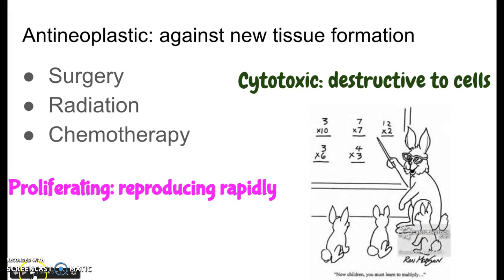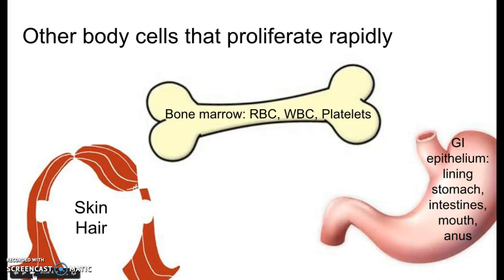Unfortunately, there are a few body cells out of the trillions we have that do proliferate rapidly. Most of those are found in three areas. The first is skin and hair. Skin and hair cells do proliferate rapidly, and chemotherapy doesn't know the difference, so it's going to attack those skin and hair cells just like it does the cancer cells. That's why alopecia — meaning hair loss — and weird rashes and very sensitive skin are side effects of chemotherapy.